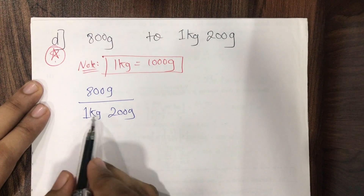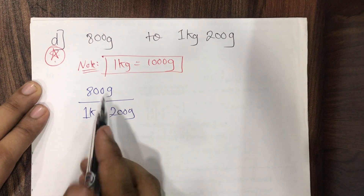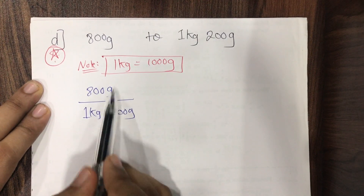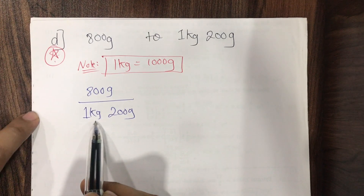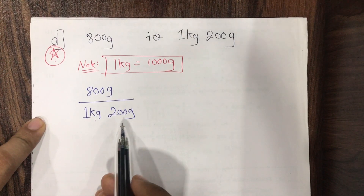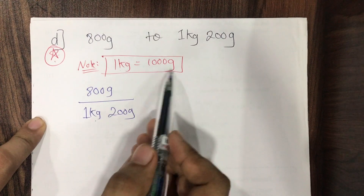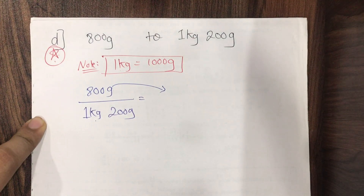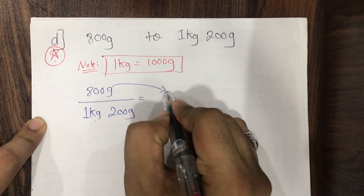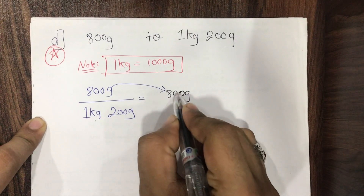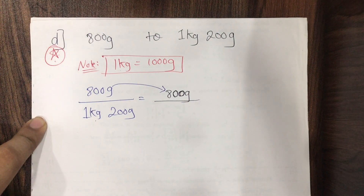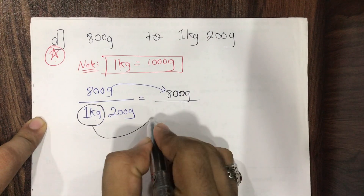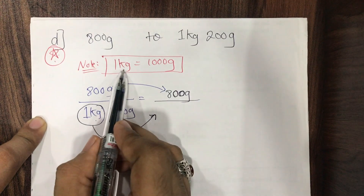This question is important because in the denominator we have two types of quantities — kilograms as well as grams. The basic idea: convert the complete numerator to one unit and the complete denominator to one unit, and both should match. In the numerator we have grams; in the denominator we have kilograms and grams. We'll convert everything into grams — the lowest unit. 800 grams is already in grams, so I write it as it is.